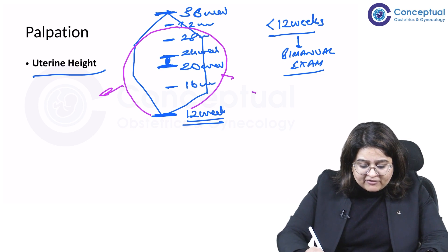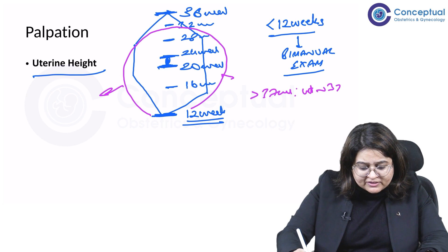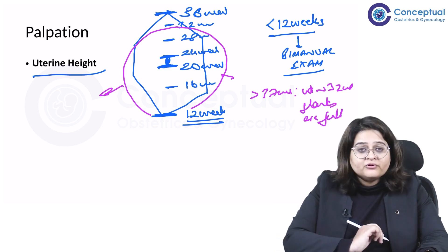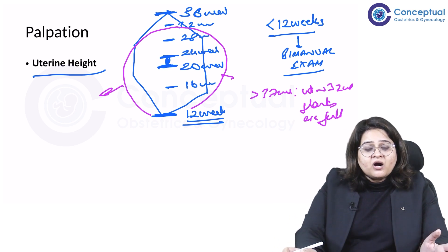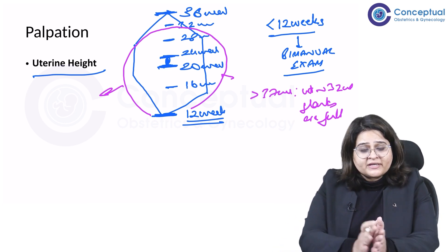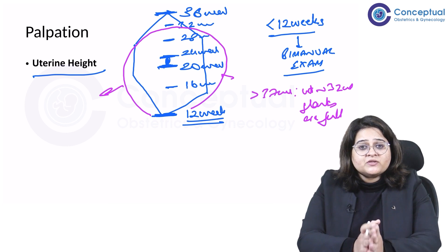So at after 37 weeks, the uterus is at 32 weeks and the flanks are full. So that's how you look for the uterine height, and that's the first thing we see on palpation.